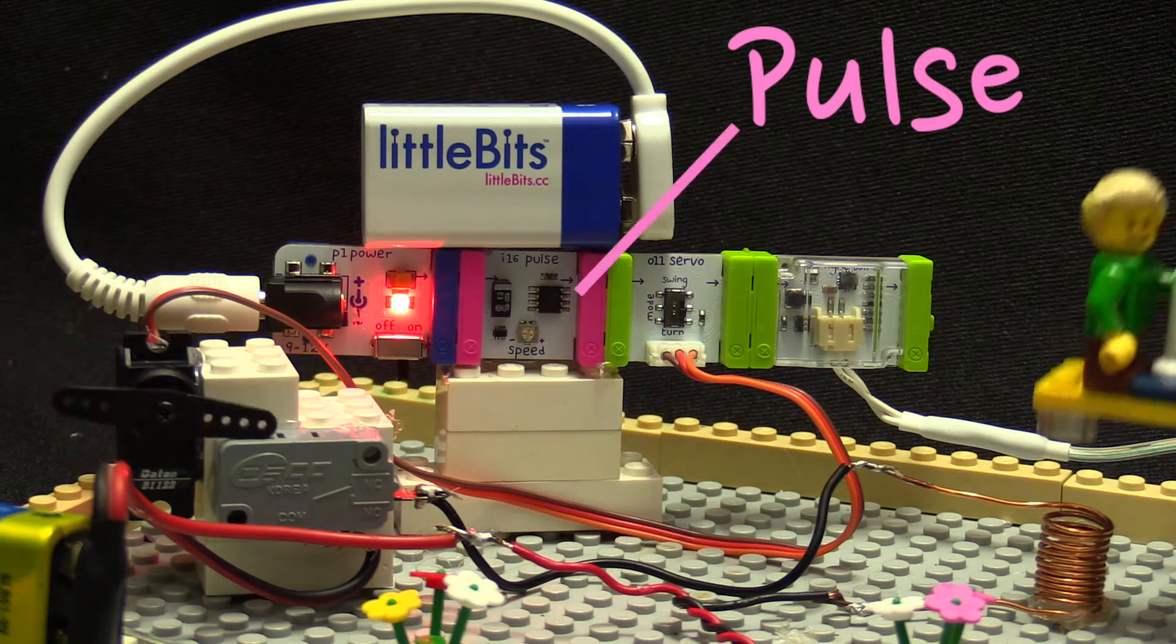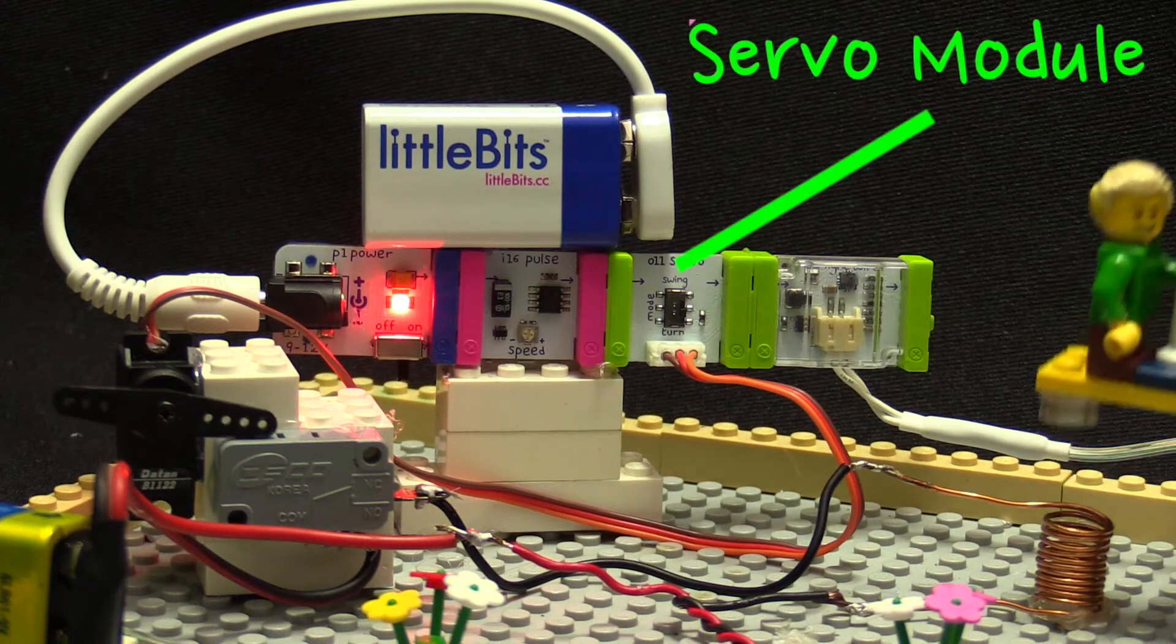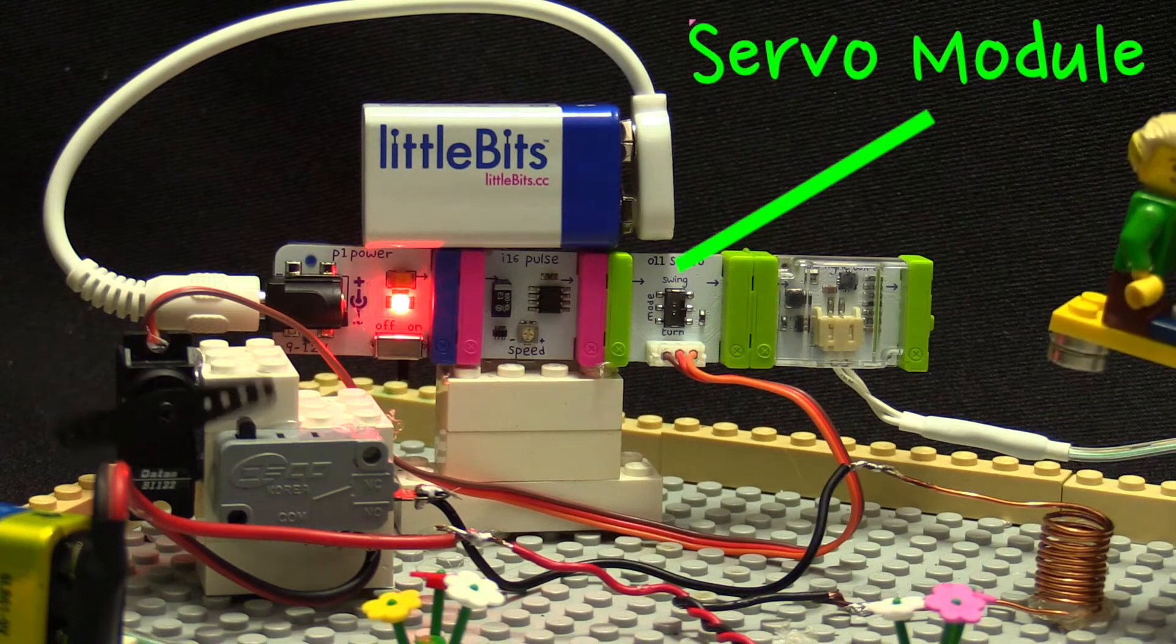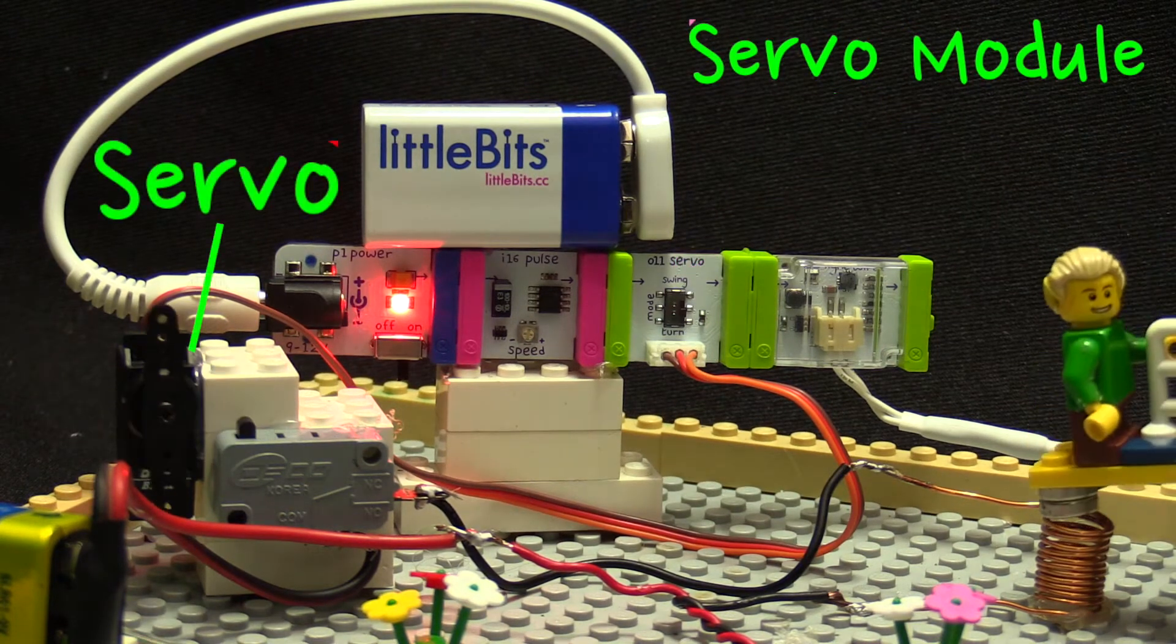That pulse current then goes to the green module which is connected to the servo, causing the servo to go backwards and forwards.